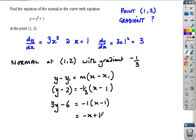Rearranging so the equation equals zero: add x to both sides, subtract 1, and we have the equation of the normal. That's our question finished.